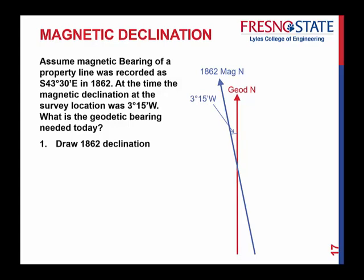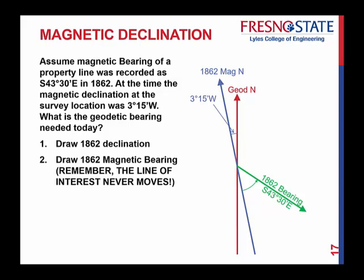Let's take it step by step. First, let's draw what the declination looks like. Here's true north in red — geodetic north. Magnetic north is always measured as the angle from geodetic north over to the magnetic north position. So we have 3 degrees 15 minutes west — that's the 1862 magnetic north shown in blue. In 1862, we measured an angle of south 43 degrees 30 minutes east, but it was a magnetic angle. We're measuring off of the given reference line, which was magnetic north — not true north. So the measurement is made off of the north-south line of magnetic north. That was the 1862 bearing: south 43 degrees 30 minutes east.